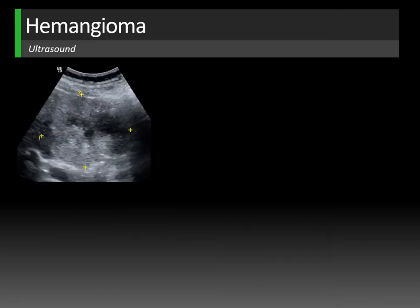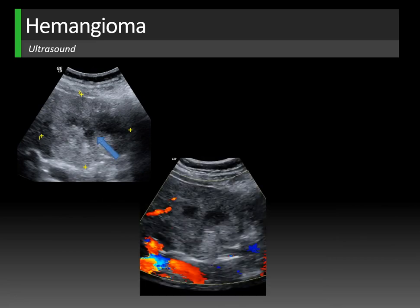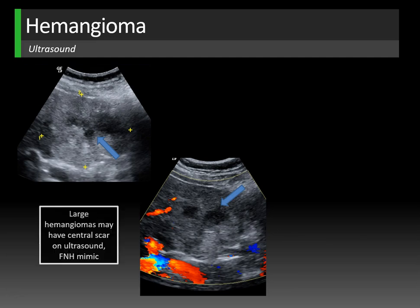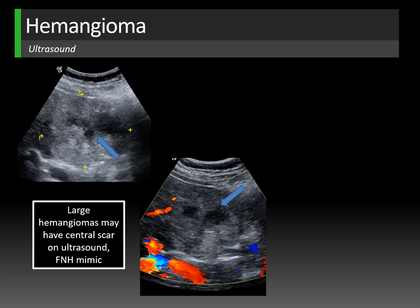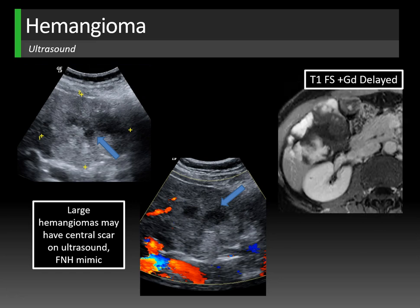Here's a patient with a large heterogeneous mass in the right lobe — echogenic with central hypoechogenicity and no real color Doppler flow, with a central scar or hypoechoic region visible. In a young female, you might think of focal nodular hyperplasia, but this was actually a hemangioma. Large hemangiomas can have central scars on ultrasound and mimic focal nodular hyperplasia or other masses. The correlative MRI shows the typical hemangioma enhancement pattern.